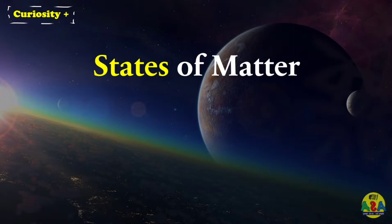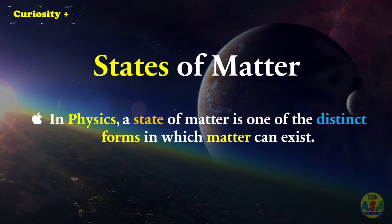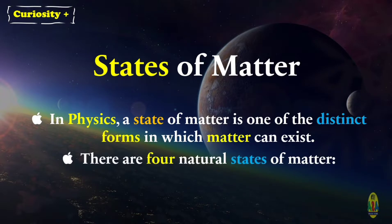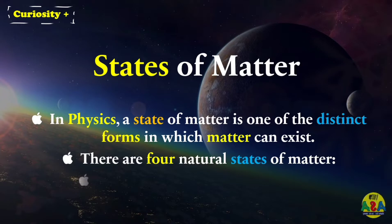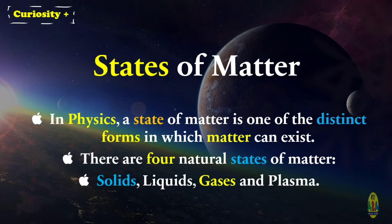States of matter. In physics, a state of matter is one of the distinct forms in which matter can exist. Interestingly, there are four natural states of matter: solids, liquids, gases, and plasma. Plasma is also known as the ionized state of matter.